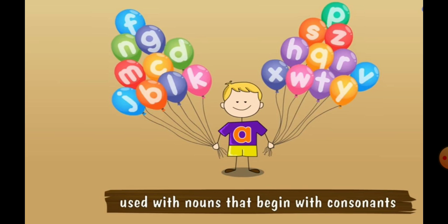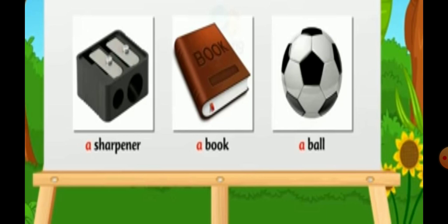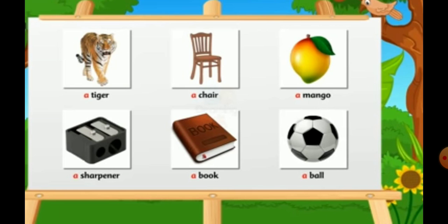The remaining letters of the English alphabet, other than A, E, I, O and U, are called consonants. When a word starts with a consonant or the consonant sound, we use A before such words. For example: a tiger, a chair, a mango, a sharpener, a book, a ball. As you can see, tiger, chair, book, and ball all start with a consonant sound. So A is used in front of them.